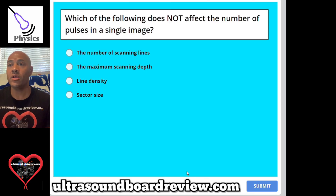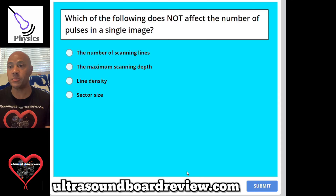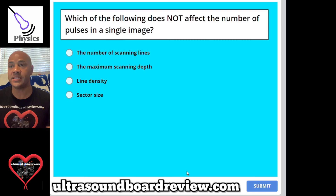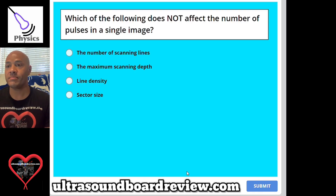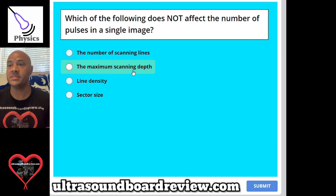Question 53: Which of the following does not affect the number of pulses in a single image? A, the number of scanning lines; B, the maximum scanning depth; C, line density; or D, sector size. The answer is B, the maximum scanning depth.